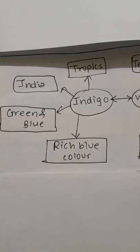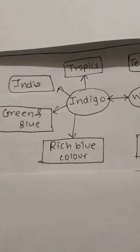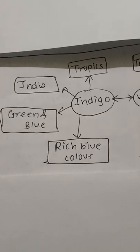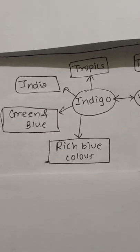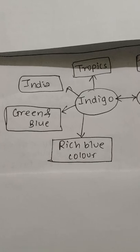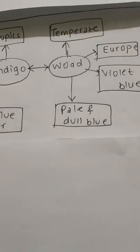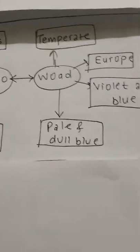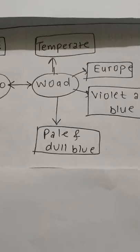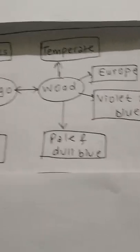When there was huge demand for indigo, the farmers could not complete the total demand for indigo. So, the alternative for indigo was woad.